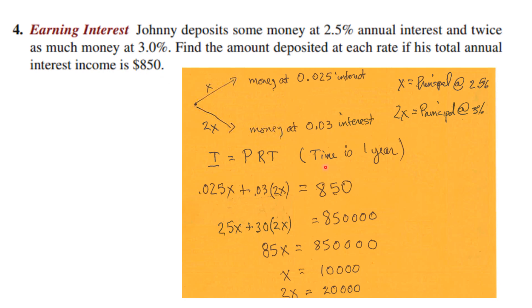Annual income means the time is one year. The formula for simple interest is I equals PRT. We let x be the money at 2.5% interest, which is 0.025, and 2x is the principal at 3%, which is 0.03. The interest income from both is 0.025x plus 0.03(2x) equals 850.